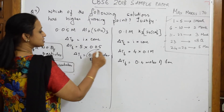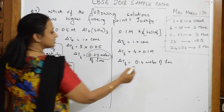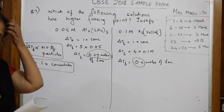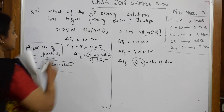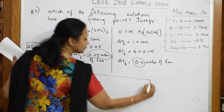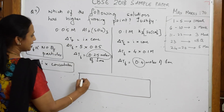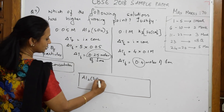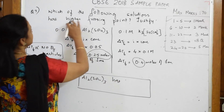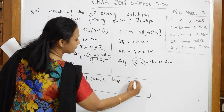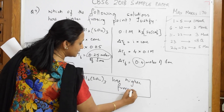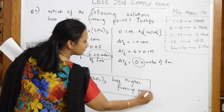Now compare: 0.4 moles of ions versus 0.25 moles of ions. The number of particles is more in the second solution. So we can conclude — box your answer — Al₂(SO₄)₃ taken three times has the higher freezing point. You can directly write the answer this way and you will get the mark.